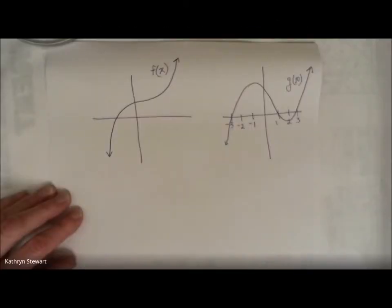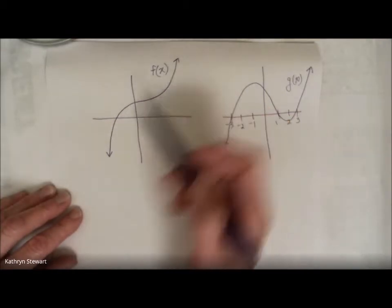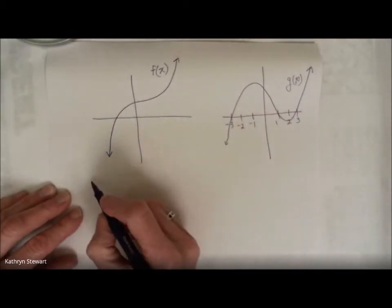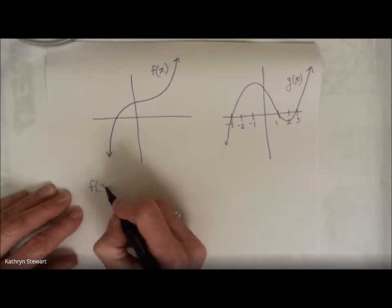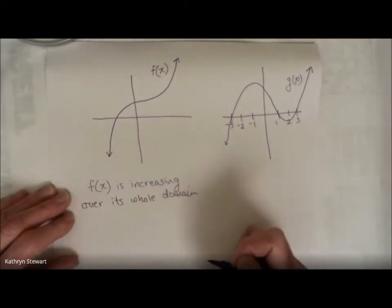Let's remember what it means to describe functions as either being increasing or decreasing. If we're looking at f of x, I think we would all agree that this function is increasing over its whole domain. And if we wanted to justify why, what would we say?